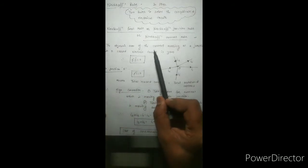Kirchhoff in 1842 gave two rules which are very important. The first rule is Kirchhoff's junction rule, also known as the current rule. By definition, the algebraic sum of currents meeting at a junction in a closed electric circuit is zero.